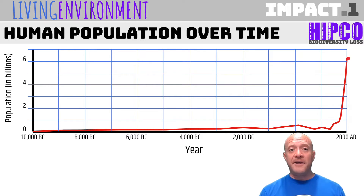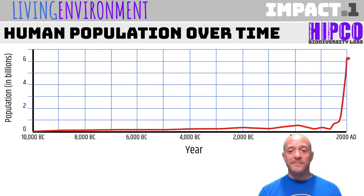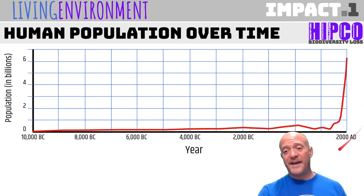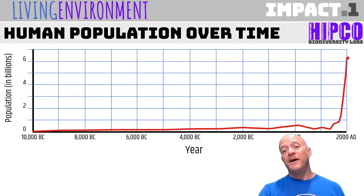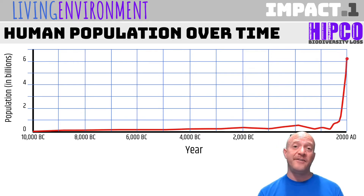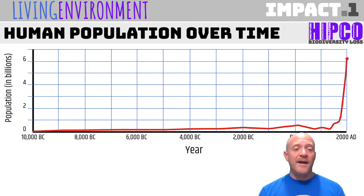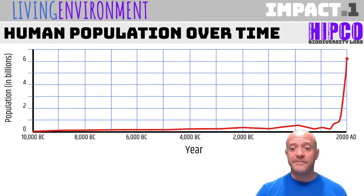We don't know what the carrying capacity of the planet is. We're definitely above 7 billion right now — this data is from 2000, but the population is still going up. Scientists are not sure whether the carrying capacity of the earth is 8, 9, or 12 billion. They don't expect it to be much more than 12 billion, although never say never.